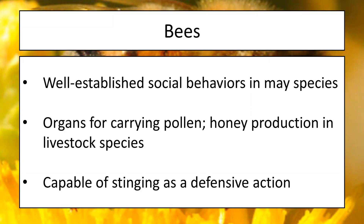Many bee species have developed at least rudimentary social behavior like a queen, though several can be solitary. Bees have also developed specific organs for carrying pollen — the honeybee has developed pollen baskets on the last set of legs. In our livestock species, namely the European honeybee, we have honey production, which is a major part of industry, especially here in Indiana. And of course we're all familiar with the bee sting — I have family members who carry an EpiPen due to bee venom allergy.